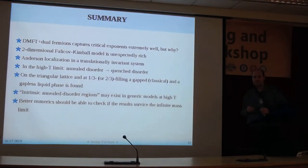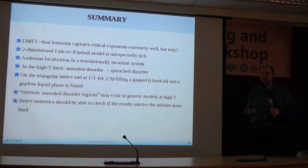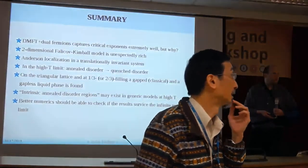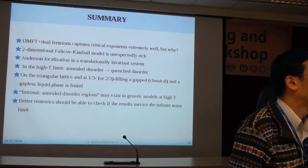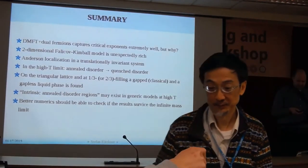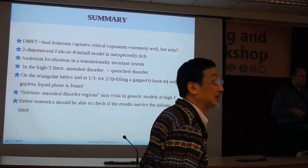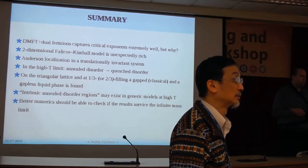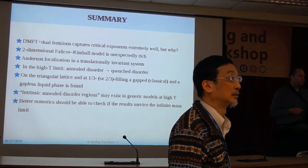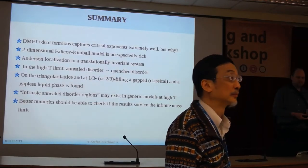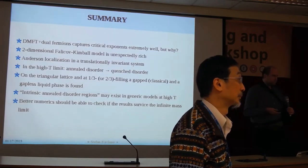We have a little bit of time for one or two questions. I had a question about the first part — the dual fermions. When you have this diagram, so this is only the ladders, right? The question is: do you know, is there a way to put in other diagrams like the bubble diagrams or other channels, or do you have some way to argue that those are less important?